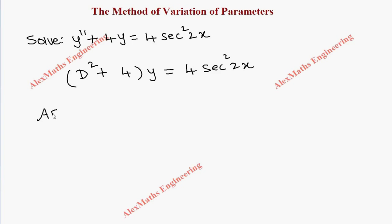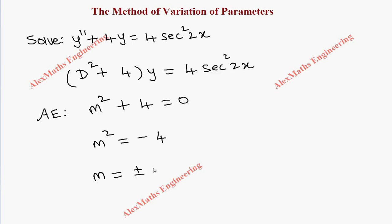As a first part we have to write the auxiliary equation, which is m² + 4 = 0. So m² = -4, giving m = ±2i. This is of the form α ± iβ, where α = 0 and β = 2.